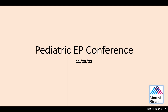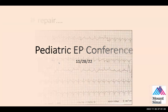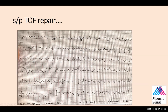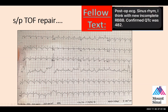Let's go to our first tracing today. This is a tracing obtained following tetralogy repair — an early post-operative electrocardiogram. The fellow sent me this tracing while I was on call one evening, once the patient was settled in bed. The fellow wrote: post-op ECG sinus rhythm, I think, with new incomplete right bundle branch block. Confirmed QTc was 482, referring to what the computer had calculated for this tracing.